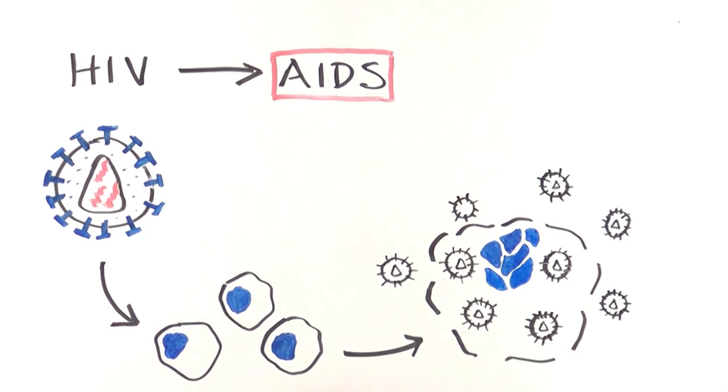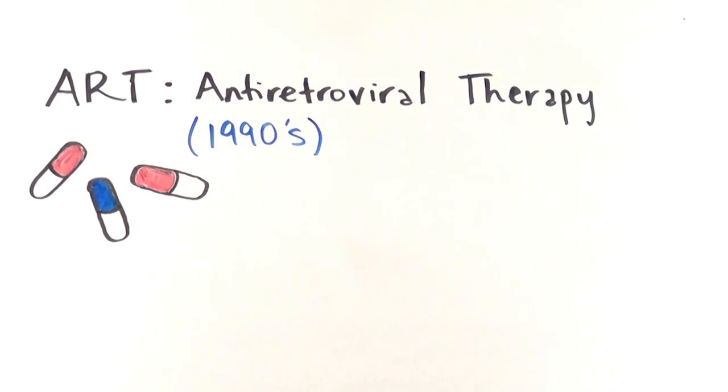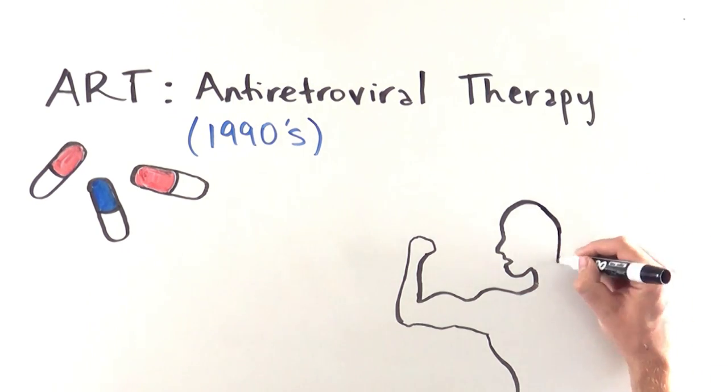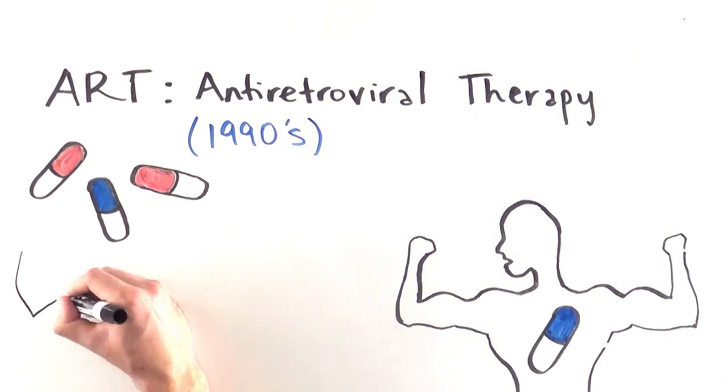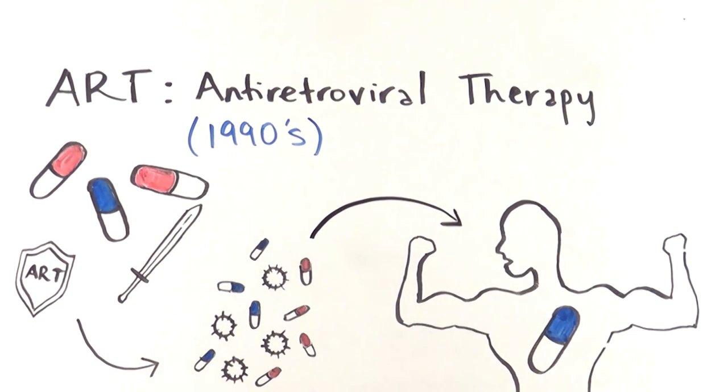Current therapy for HIV is antiretroviral therapy, ART, which was established in the 1990s. These drugs have transformed HIV diagnosis from a death sentence into a manageable chronic illness. They work at various stages to prevent the HIV virus from making more virus and infecting more cells.